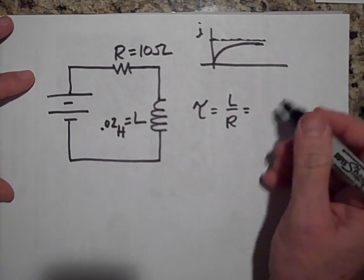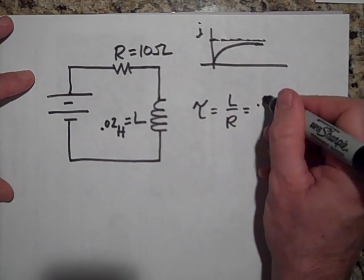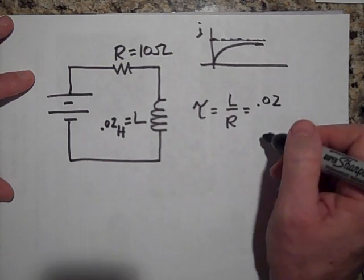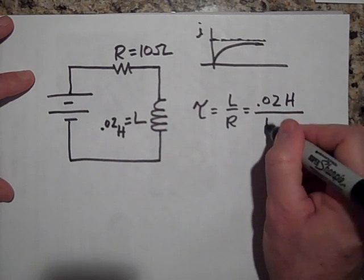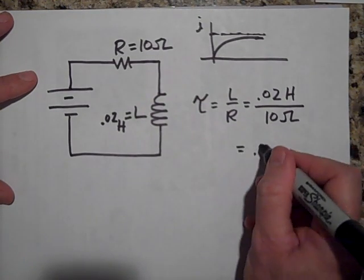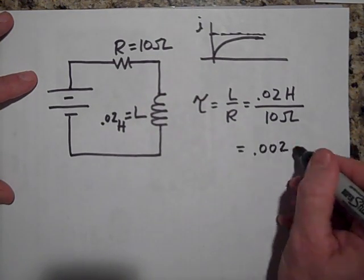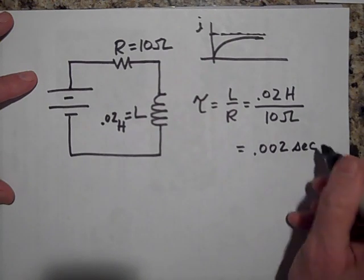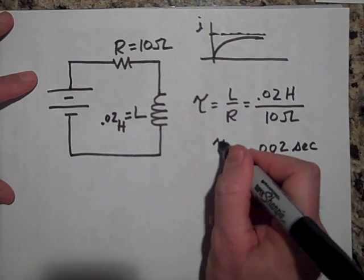So it's going to take, to get to two-thirds of its final value, it's going to be 0.02 henrys divided by 10 ohms, so that's going to be 0.002 seconds.